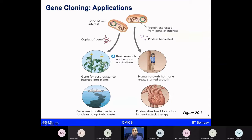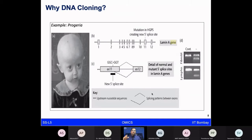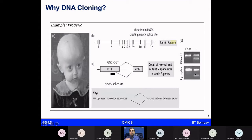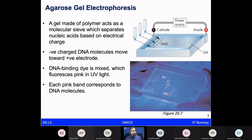For example, if your goal is to study the lamin A gene for progeria syndrome from a previous lecture, you want to amplify this gene, understand how it works, make multiple copies, and test it on an agarose gel to verify the specific size of that amplification product. To verify that you are looking at a gene of the correct size, you use a technique known as agarose gel electrophoresis.